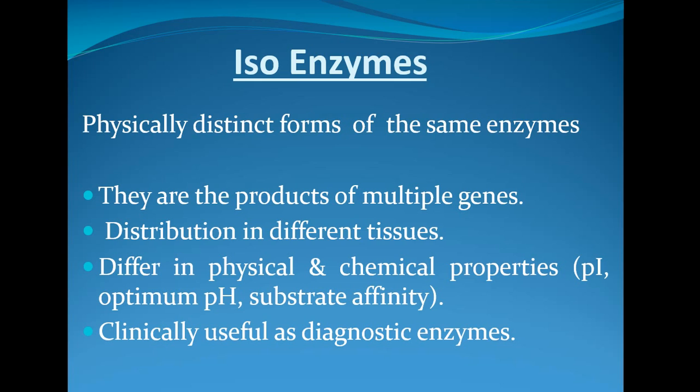Isoenzymes are the products of multiple genes — they are not produced by a single gene but by multiple genes. That is why they are somewhat distinct. They may perform the same kind of function but they are still distinct, and mostly they look the same but there is a difference.